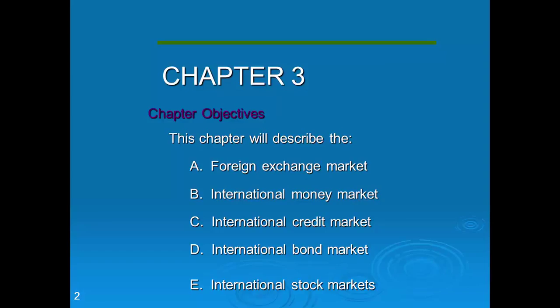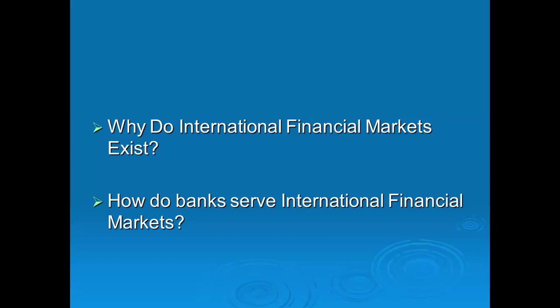Why do international financial markets exist? The single rationale is that they are there to help facilitate trade between countries and within companies in different countries. They act as the middleman — they help convert your currency from one country to another and help you borrow in other currencies. Banks serve international financial markets by acting as intermediaries.